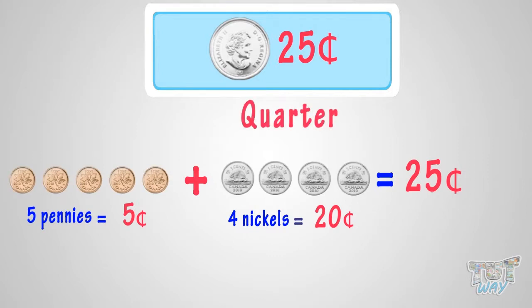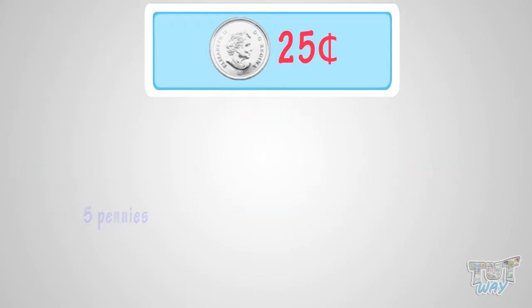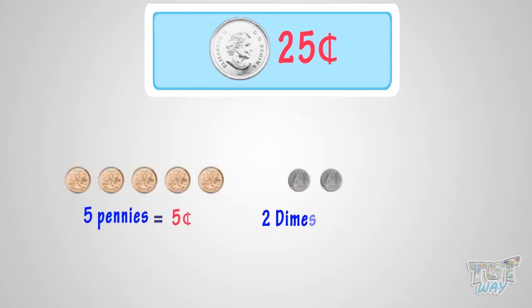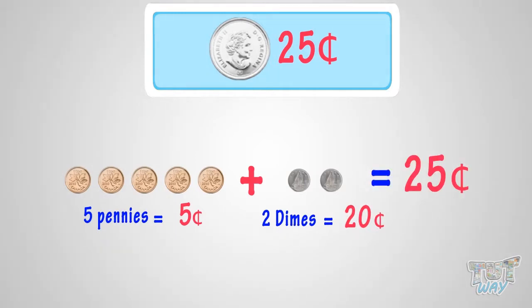Let's learn one more way. Five pennies and two dimes. As five pennies make 5 cents, two dimes make 20 cents, so in total we will have 25 cents. We have 5 cents plus 20 cents equals 25 cents. So we can exchange this set of coins too for a quarter.